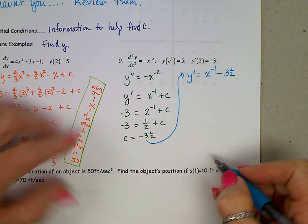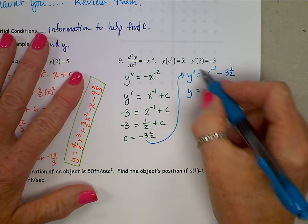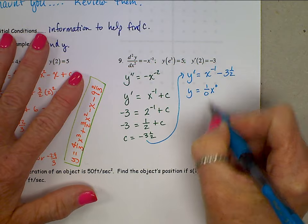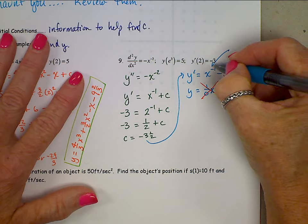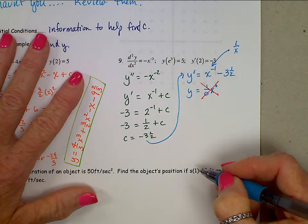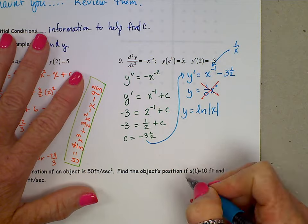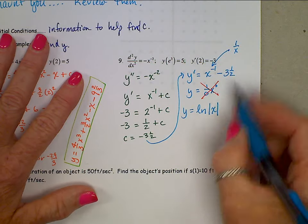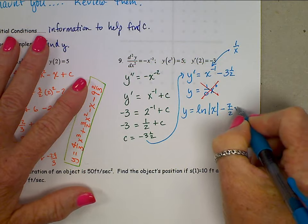If we do an anti-derivative, and you try to use that add 1 to the exponent thing, that gives us x to the 0, and then divide by the new exponent. Oh, we can't do that. That doesn't work. So I need you to think that this x to the negative 1 is 1 over x. The anti-derivative, then, is natural log, the absolute value x. And then the anti-derivative of a negative 3 and a half is negative 3 and a half x, but don't use mixed numbers. Write it as 7 halves x plus a different c.